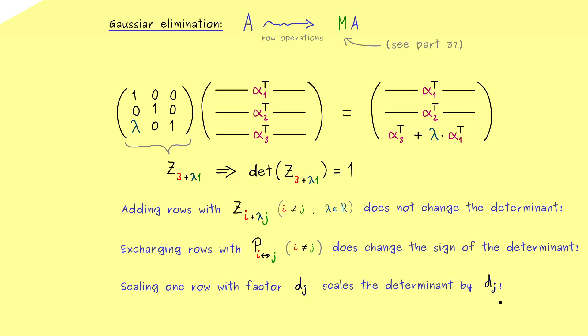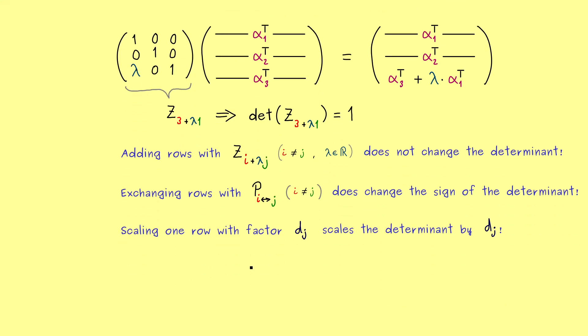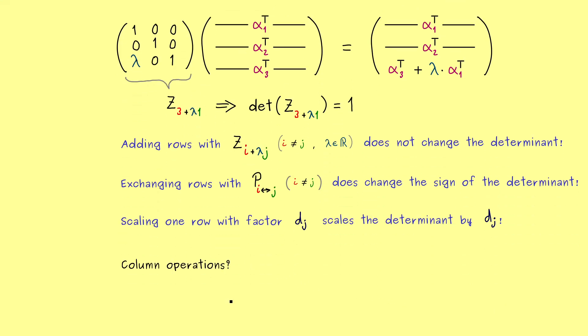Ok and with that I would say you have all the rules how you can use the gaussian elimination to calculate a determinant of a matrix. And now at this point you might ask can we also do column operations when we want to calculate a determinant.